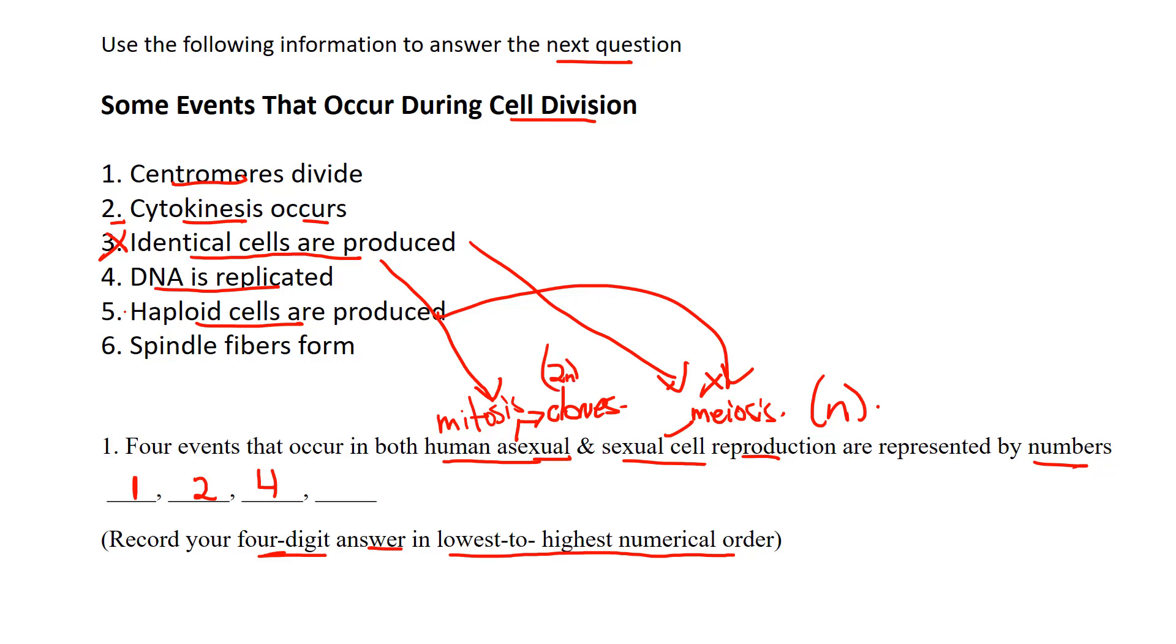And spindle fibers form - if you look at all the notes for that, yes, spindle fibers are what's required to manipulate those chromosomes during both mitosis and meiosis. That's what's moving and separating those chromosomes to opposite poles. So that happens in both of them.